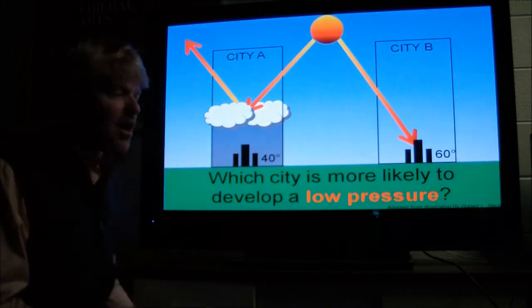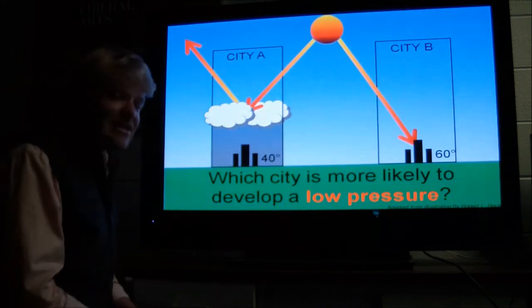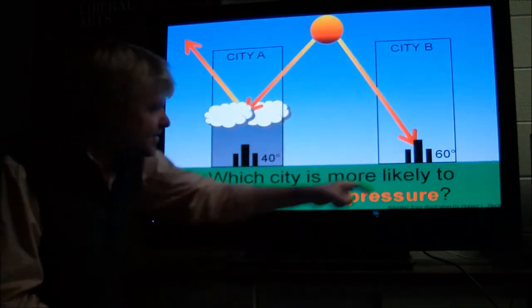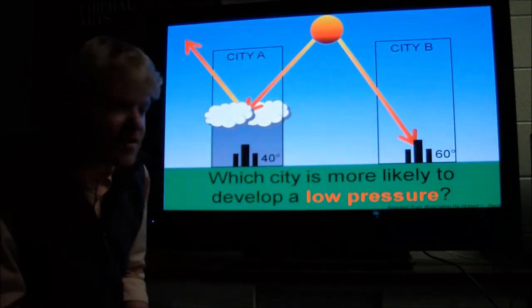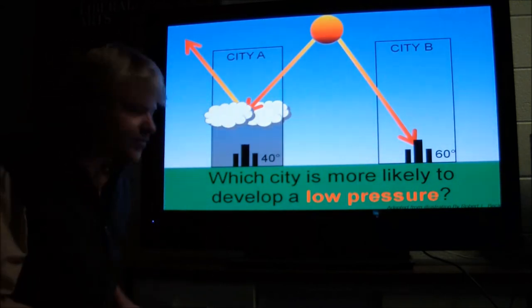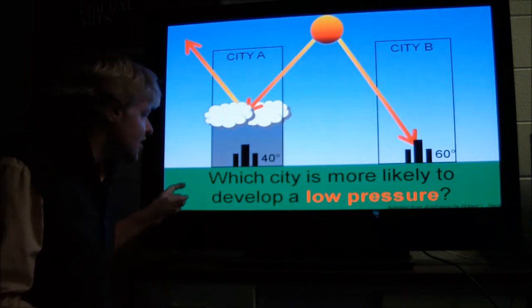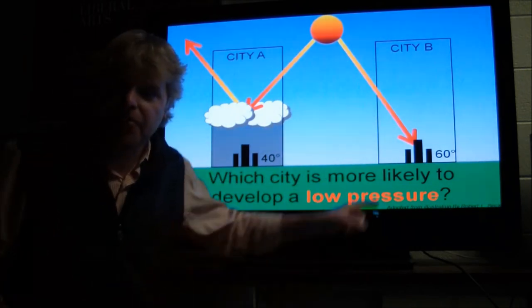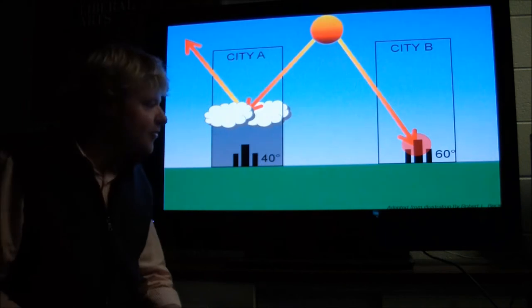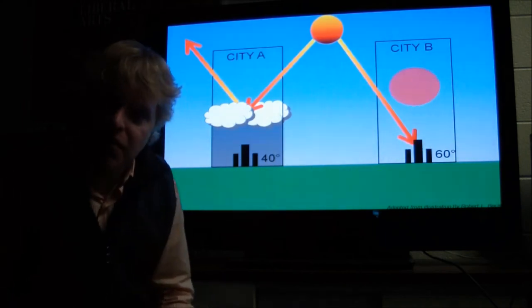Now let's apply this to actual real life city and coastline perspectives. And so here's city A and city B. City B, 60 degrees Fahrenheit during the day, whereas city A, it's only 40 degrees because of cloud cover. We already know the reasons for that in a previous discussion. Which city is more likely to develop a low pressure? It's going to be city B. Why? Because city B is warmer.